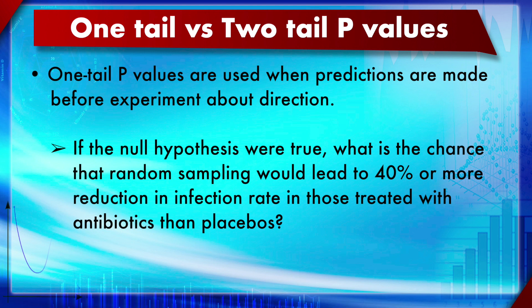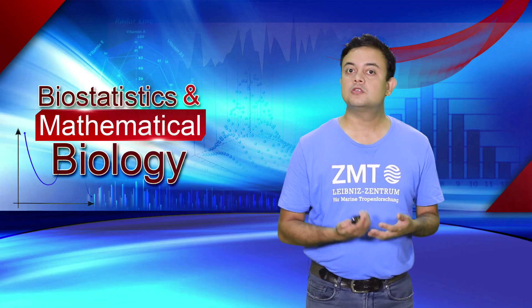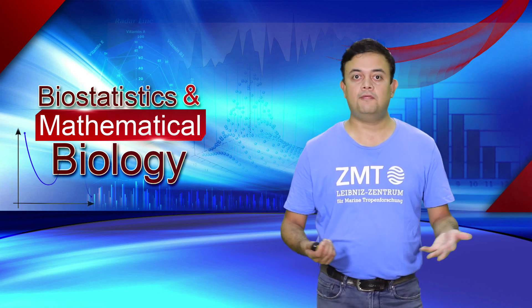For example: if the null hypothesis is true, what is the chance that random sampling would lead to a 40% or more reduction in infection rate in those treated with antibiotics versus placebo? That kind of directional question uses a one-tail p-value. Other examples include fever, profit, or whether an antibiotic impairs kidney function measured by increased serum creatinine levels. The null hypothesis would be the drug does not increase serum creatinine, and the alternative is the drug does increase it — a one-tail scenario.